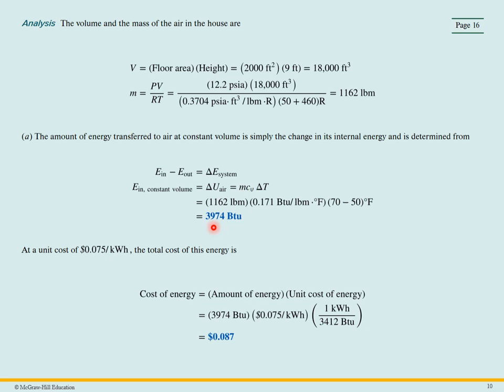So how much does that cost us? Well, it's just the amount of energy times the cost per unit. So we know how much we used, 0.075 cents per kilowatt hour, but we have to convert from a kilowatt hour to BTU. So when you do the calculation, you get about nine cents is what it's going to be.